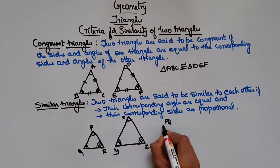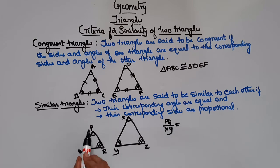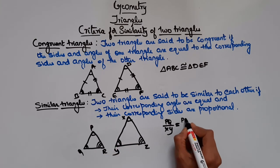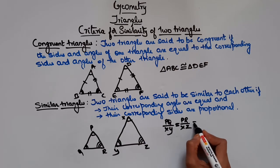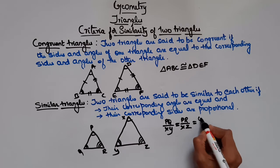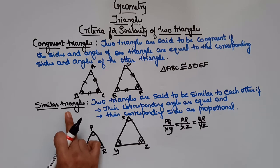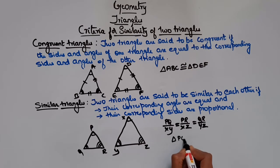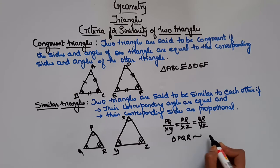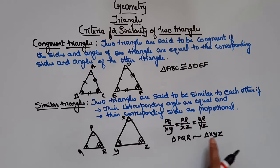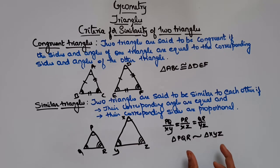And their corresponding sides are proportional, that means PQ/XY should be equal to PR/XZ, which must be equal to QR/YZ. If it satisfies these two conditions, then these two triangles are said to be similar triangles. We represent this as triangle PQR is similar to triangle XYZ, where P corresponds to X, Q to Y, and R to Z.